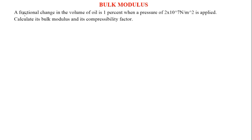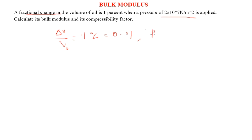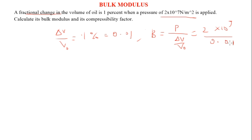Let's solve another practice problem. A fractional change in volume is expressed as ΔV/V₀ — that is the expression for fractional change, the change divided by the original. It has been given as 1%, and 1% = 1/100 = 0.01. The applied pressure is also given. To find the bulk modulus, we use B = P / (ΔV/V₀). Substituting: B = 2 × 10⁷ / 0.01, which gives 2 × 10⁹ Pa (Pascals, or N/m²).